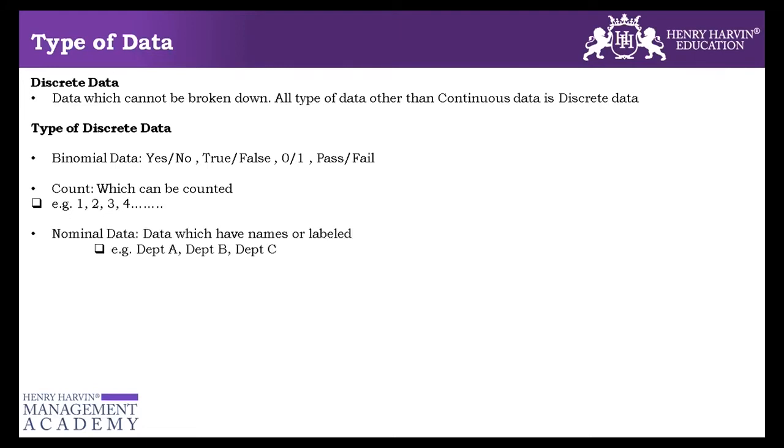Then we have nominal data, data which have names or labels. The difference between nominal and ordinal is when the data is arranged in some order or sequence. Example would be the customer satisfaction score, like excellent, very good, good. So you see, it's an order or very poor, poor, good, very good, excellent. It's in an order. So that's ordinal.